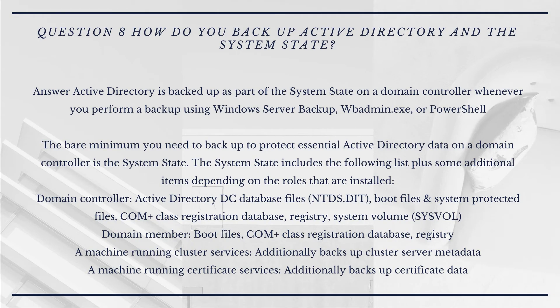Question 8: How do you backup Active Directory and the system state? Answer: Active Directory is backed up as part of the system state on a domain controller whenever you perform a backup using Windows Server Backup, Wbadmin.exe, or PowerShell. The bare minimum needed to protect essential Active Directory data is the system state, which includes: Active Directory DC database files (NTDS.dit), boot files, system protected files, COM+ class registration database, registry, and system volume (SYSVOL). A machine running Cluster Services additionally backs up cluster server metadata. A machine running Certificate Services additionally backs up certificate data.